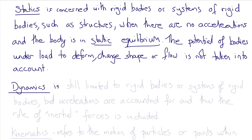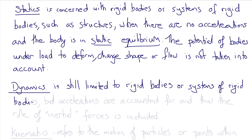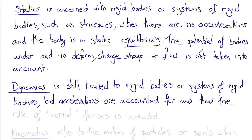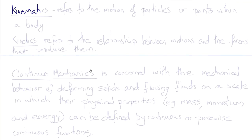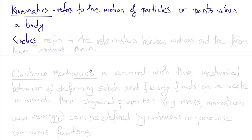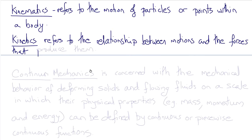In dynamics, we're still limited to rigid bodies or systems of rigid bodies, but now accelerations are included and therefore the role of inertial forces comes into play. Inertial forces are the forces associated with accelerating masses — the forces that you calculate using F = ma. Bodies that are accelerating and have inertial forces are not in static equilibrium. Kinematics refers to the motion of particles or points within a body, and kinetics refers to the relationship between those motions and the forces that produce them.